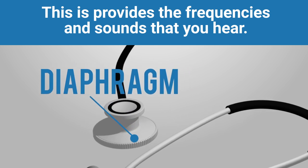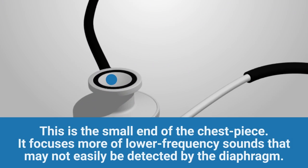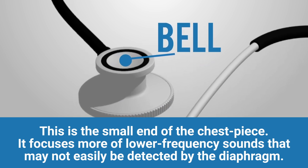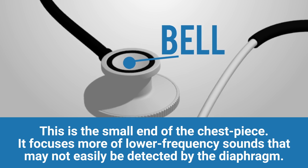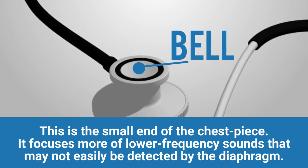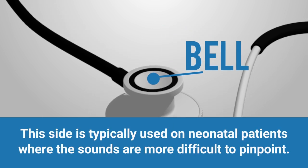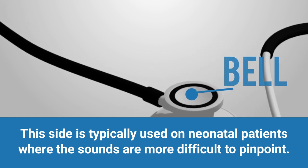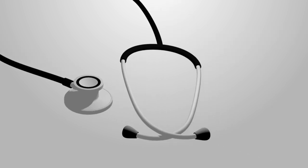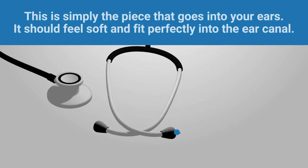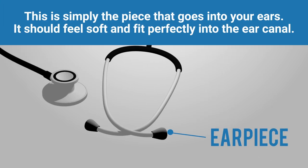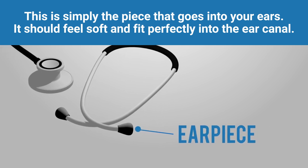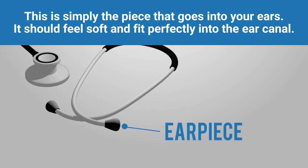The bell is the small end of the chest piece. It focuses on lower frequency sounds that may not be easily detected by the diaphragm, and is typically used on neonatal patients where sounds are more difficult to pinpoint. The earpieces are simply the pieces that go into your ears — when inserting them, they should feel soft and fit perfectly into the ear canal.